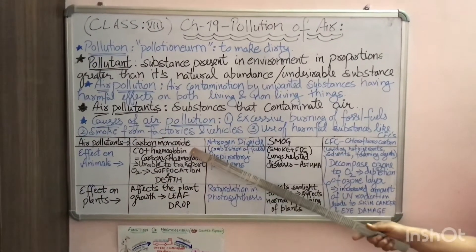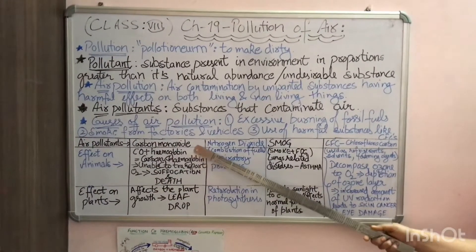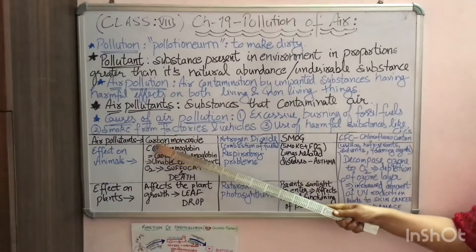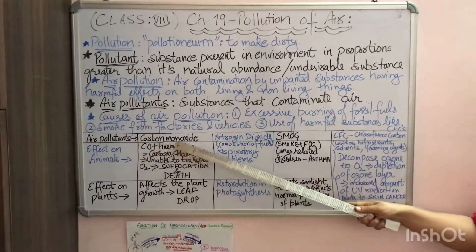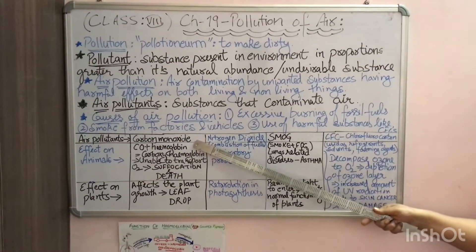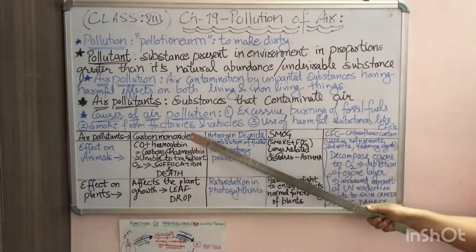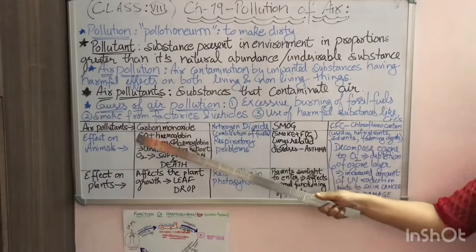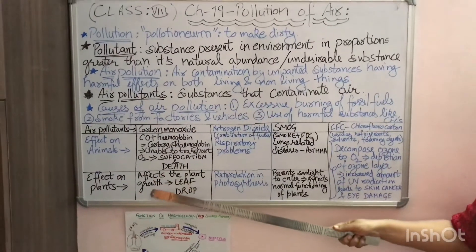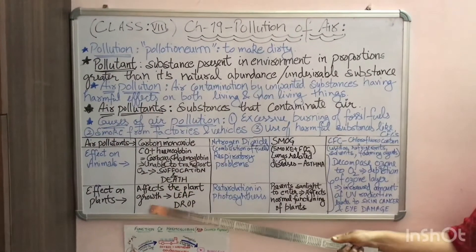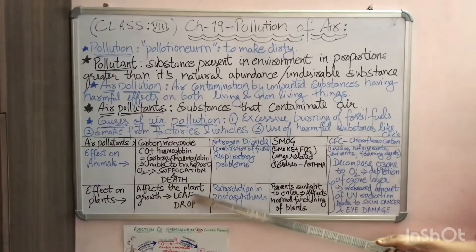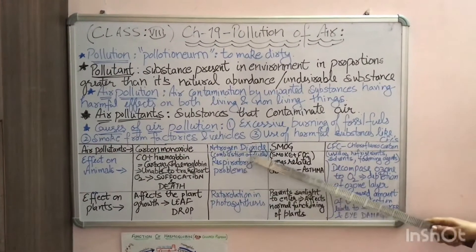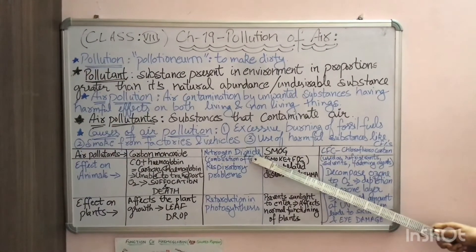That is why we should never burn any fuel in a closed room or closed space, because it leads to incomplete combustion and multiple production of carbon monoxide. The effect of carbon monoxide on plants is that it affects plant growth and causes leaf drop. We will now talk about the next air pollutant: nitrogen dioxide.